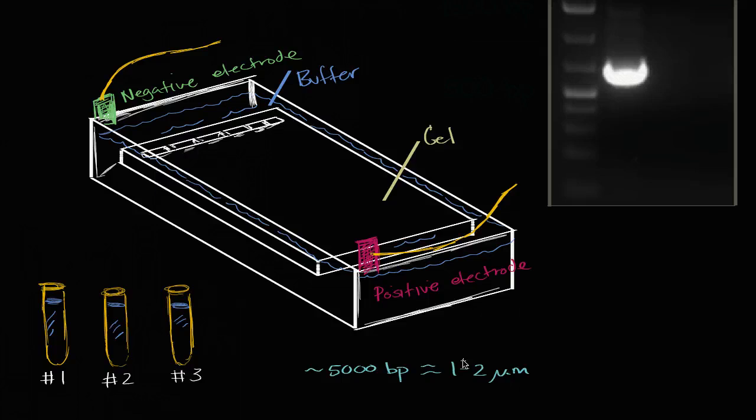But lengthwise, the long way, it's only going to be one to two micrometers, which is super duper small. This is one to two thousandths of a millimeter. So that's not going to help us to somehow try to manipulate it physically with our hands or with kind of rough tools. So how do we do that?